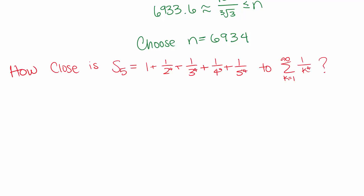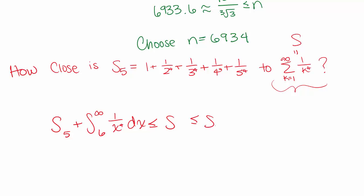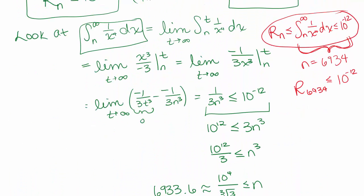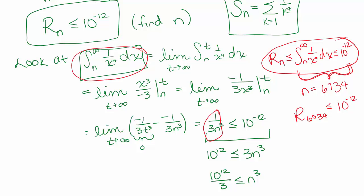Let's look at another related question. What if we were to find s of 5, just summing up the first five terms? This is something we can easily do with a calculator. How close would that be to the actual sum of the series? We know what n should be, so from our formula we can state that s sub 5 plus the integral from 6 to infinity — because that's n plus 1 — of 1 over x to the fourth dx is less than or equal to our sum, which is less than or equal to s sub 5 plus the integral from 5 to infinity of 1 over x to the fourth dx. Remember we already found a formula: this integral always equals 1 over 3 times n to the third.